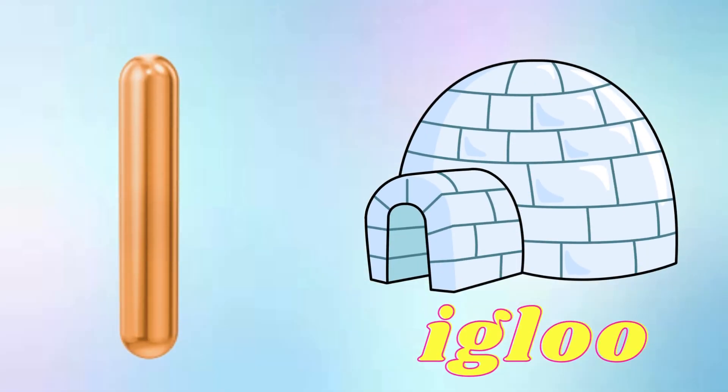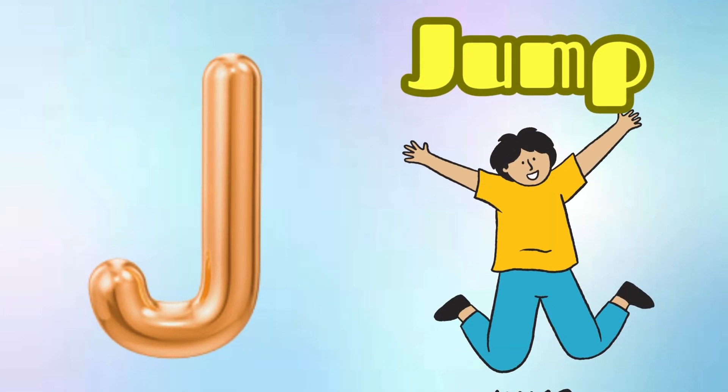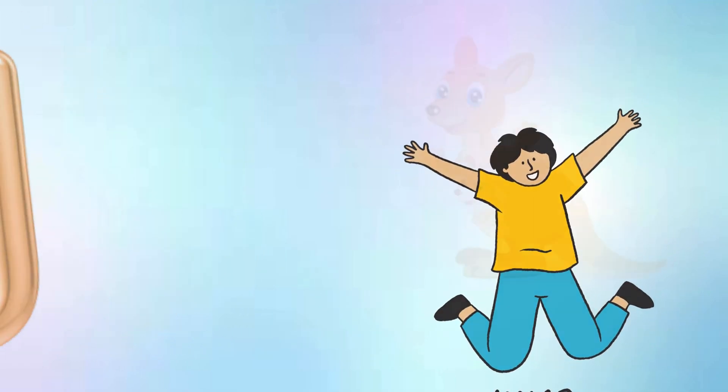I is for Igloo, I-I-Igloo. J is for Jump, J-J-Jump.